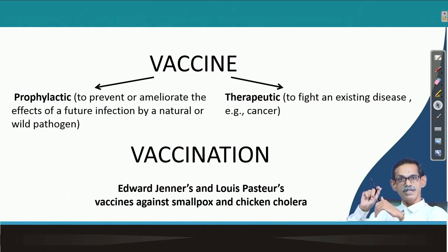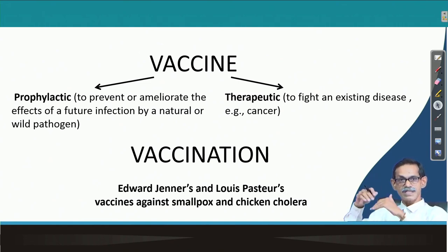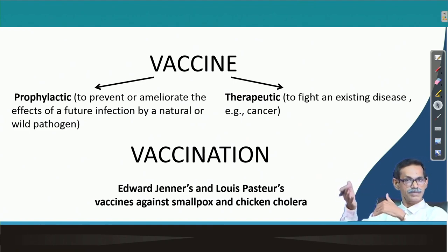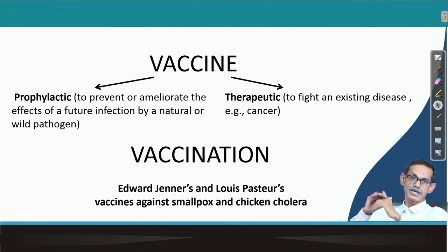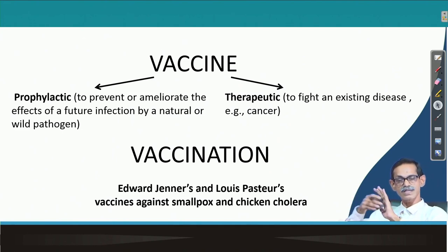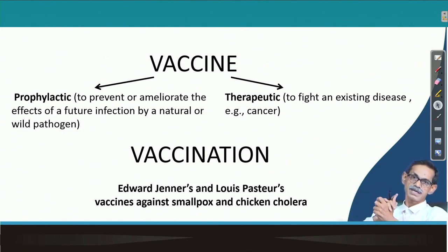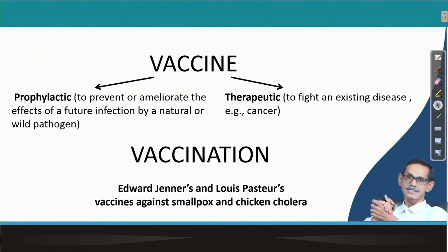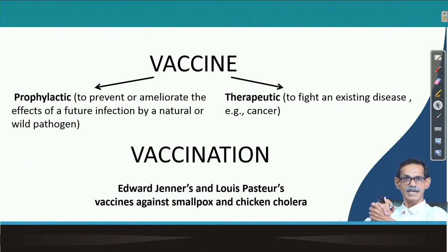What is therapeutic? It is used to fight against an existing disease. For example, if cancer is already there, we induce the immune system with certain antigens or vaccine candidates so that the immune system can specifically help treat or cure the cancer better — it is in addition to other cancer treatments.